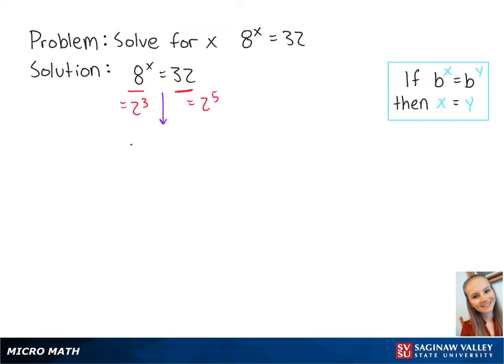So we can rewrite this as 2 to the third power to the x power equals 2 to the fifth power. If we multiply the exponents together,